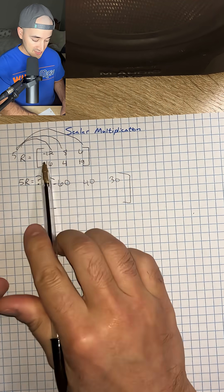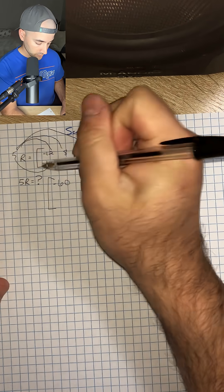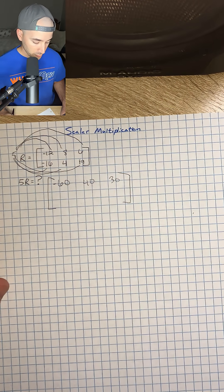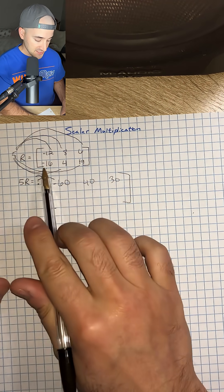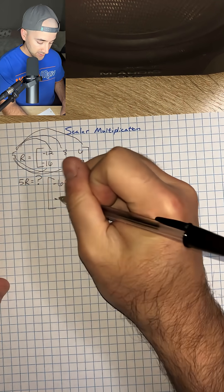Then we're going to do the same thing with the bottom row. I'm going to distribute that to all three terms. 5 times negative 16 is negative 80.